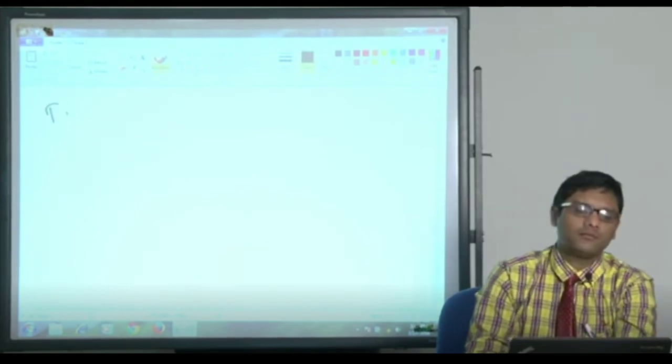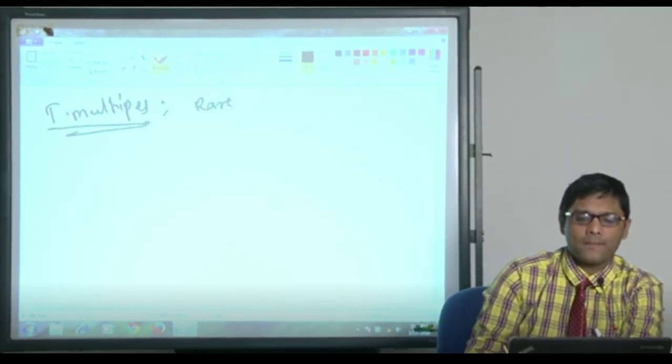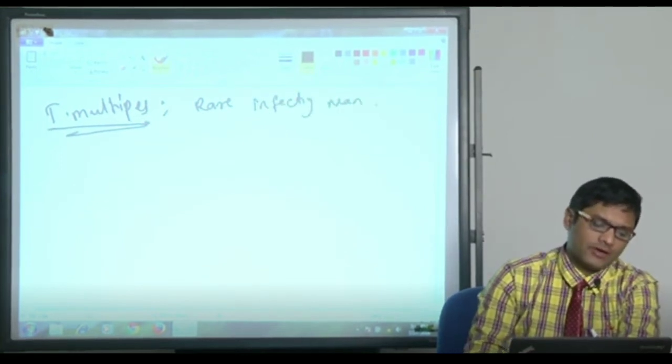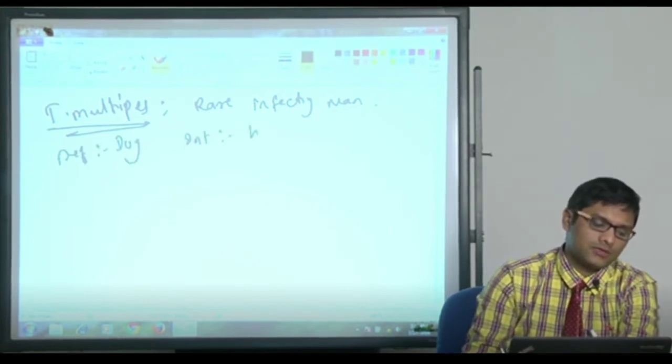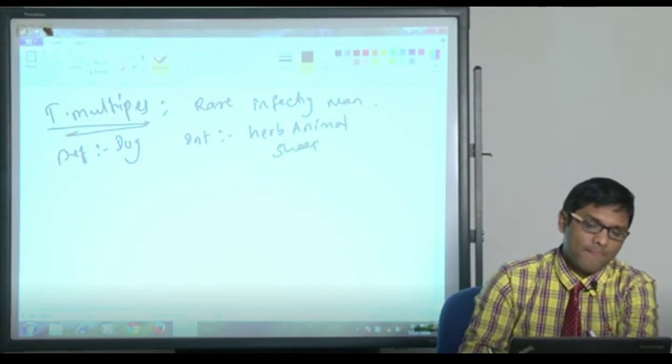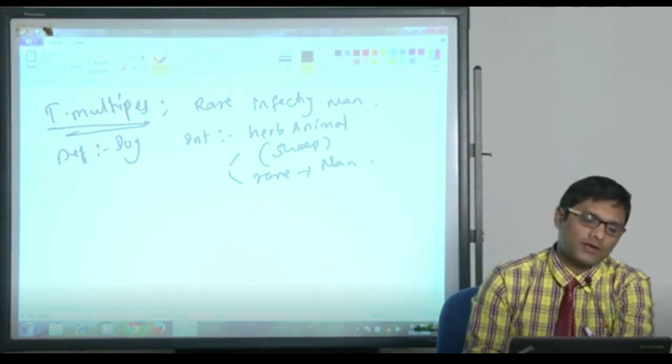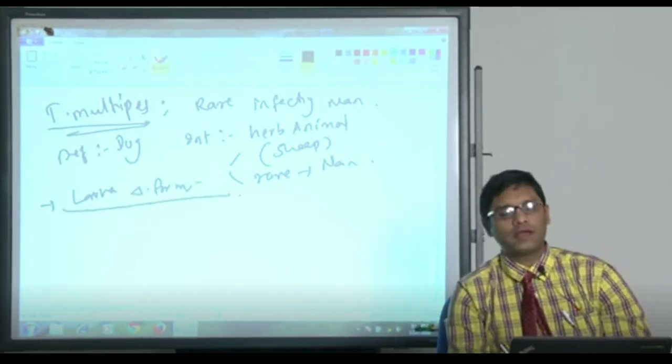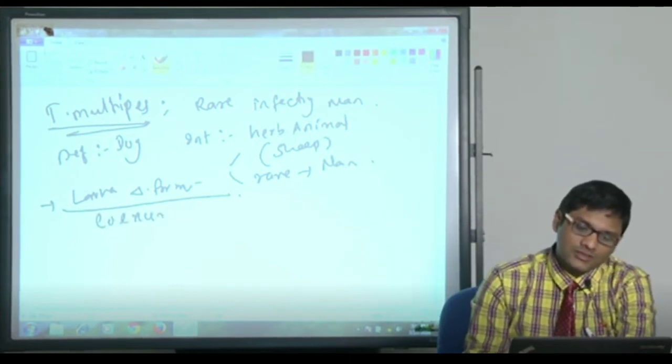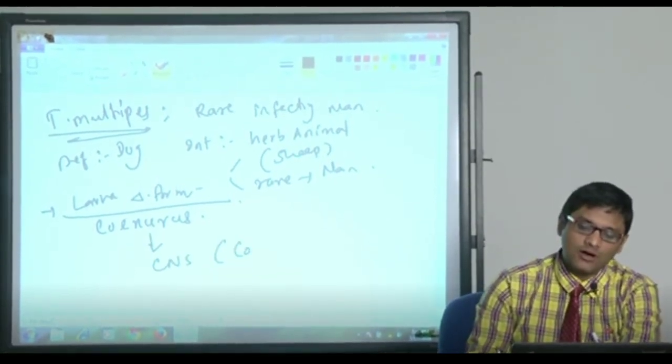Then Tinea multiceps. Tinea multiceps is a very rare parasite infecting man. Here the definitive host is dog, intermediate host is mainly herbivorous animals like sheep, and rarely intermediate host is man. Here also the larval form is the diagnostic form. The larval form of tinea multiceps is called as coenurus. Coenurus is deposited in CNS and the disease is called coenurosis.